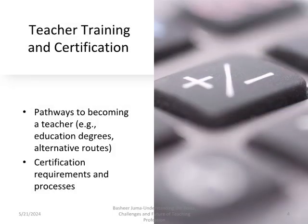Teacher Training and Certification: Pathways to Becoming a Teacher. Education Degrees involve completing a Bachelor's or Master's Degree in Education. Alternative Routes include programs for career switchers, such as Teach for America or other certification programs. Certification requirements vary by region but generally include completing an accredited teacher education program, passing certification exams, and completing a period of student teaching.